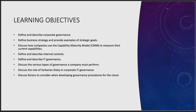We'll discuss how companies use the Capability Maturity Model to measure their current capabilities. CMM is a really interesting baseline to study how you do things. We'll also define and describe internal controls, describe and define IT governance, discuss the various types of governance a company must perform, and discuss the role of Sarbanes-Oxley in corporate IT governance. SOX is an interesting law — if you haven't run into it before, it's good from a cloud viewpoint to really understand how it works.